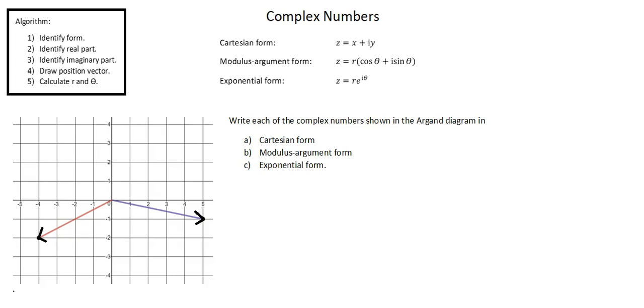An argand diagram is a plane representation of complex numbers. Real numbers have one dimension. We go right for positive, left for negative. In the case of complex numbers, we need two dimensions.